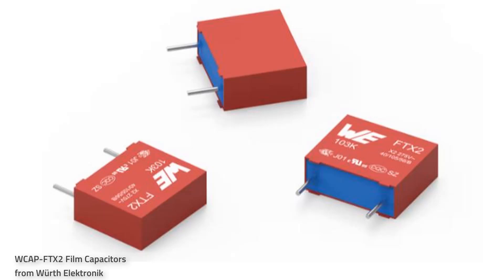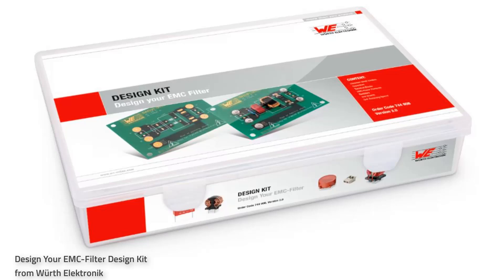When choosing an EMI filter, several factors need to be considered. First, identify the specific frequency range and interference levels to address. Second, select a filter type that effectively suppresses the identified EMI. Third, ensure the filter performs well under expected environmental conditions such as temperature and humidity. Fourth, choose a mounting method compatible with your PCB layout and production process. Finally, verify that the filter works well with your system's connections, cables, and power supply.